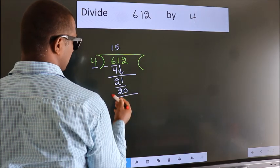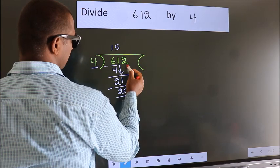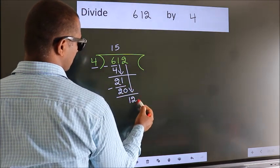Now we subtract, we get 1. After this, bring down the beside number, so 2 down, so 12.